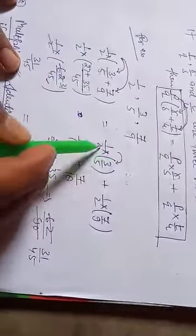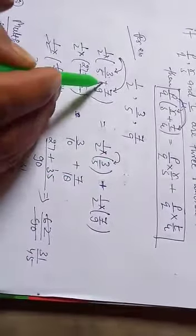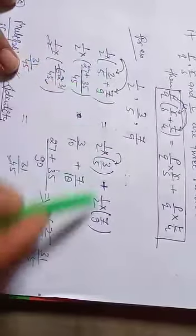Then 1 by 2 multiply 3 by 5. We have bracket, plus sign is there, it will be plus. Then 1 by 2 multiply 7 by 9.